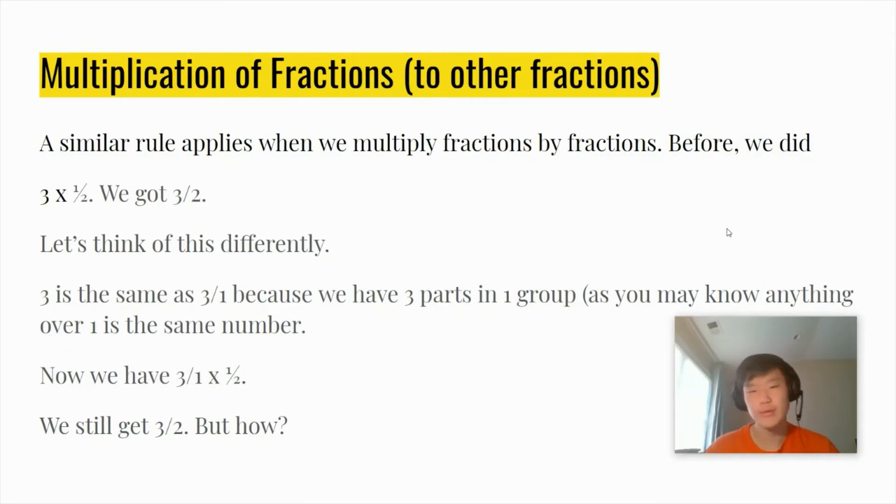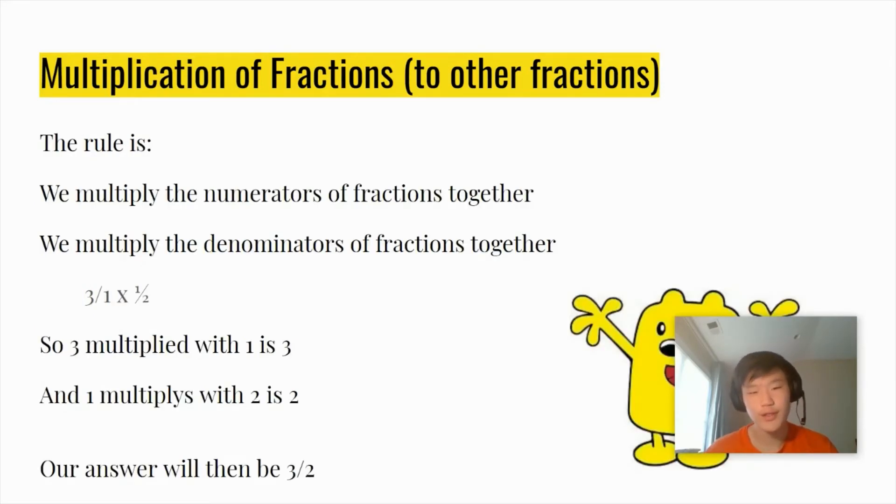So a similar rule applies when we multiply fractions by fractions. Before we did 3 × 1/2 and we got 3/2. Let's think of this differently. 3 is the same as 3/1 because we have 3 parts in one group. Now we have 3/1 × 1/2, but we still get 3/2. But how? The rule is we multiply the numerators of the fractions together and we multiply the denominators of the fractions together. So when we have 3/1 × 1/2, the 3 multiplies with the 1 in 1/2, which gets us 3, and the 1 from the 3/1 multiplies with the 2 in the 1/2, which is 2. Our answer will then be 3/2 as we put the numerator over the denominator.